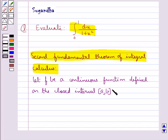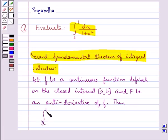And F be an antiderivative of f. Then integral a to b of f(x) dx is equal to F(x) evaluated from a to b, that is equal to F(b) minus F(a).